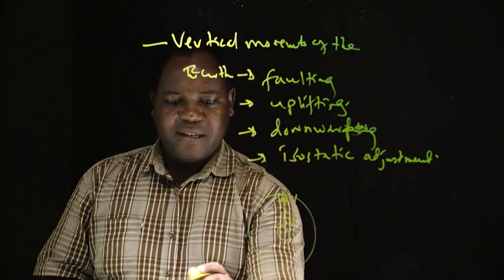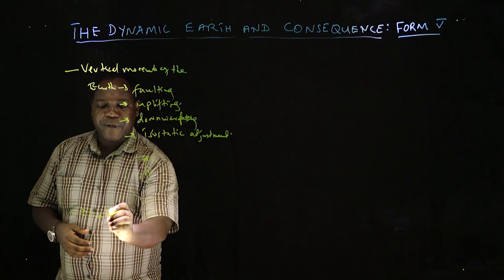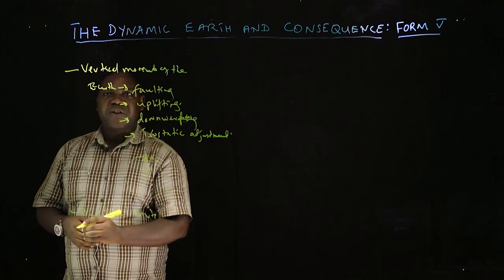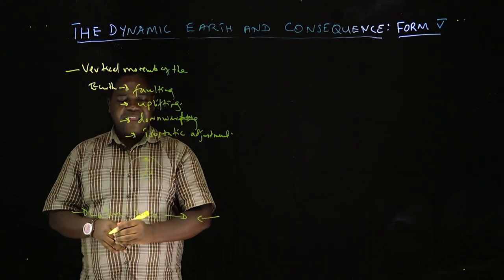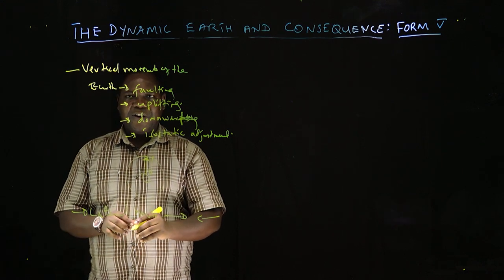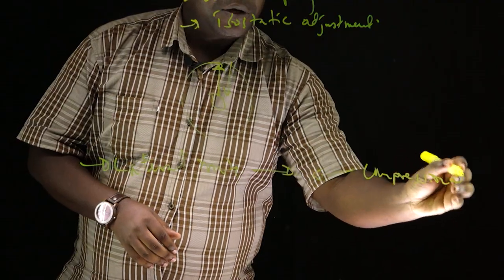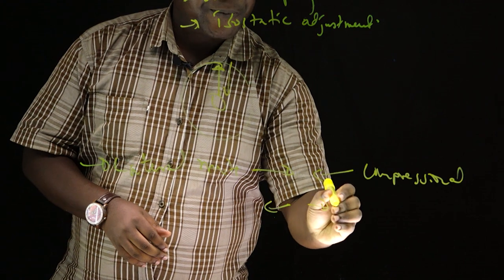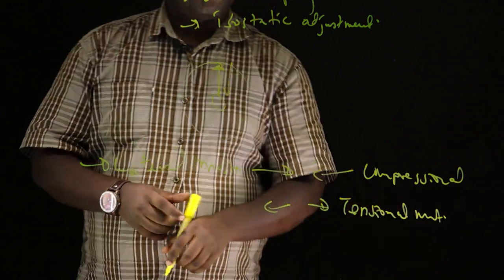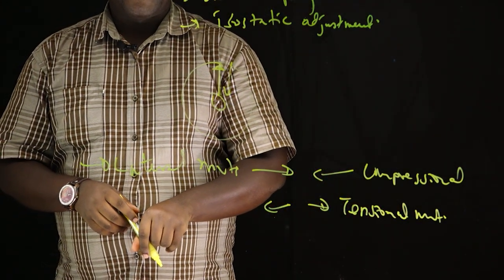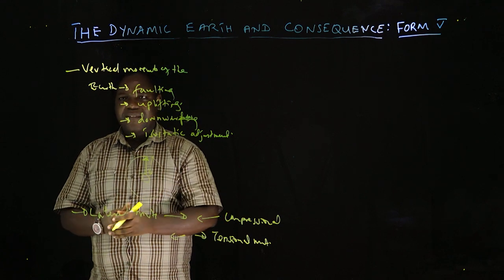The second movement, as part of introduction, is what we call lateral movement — the sideway movement. This is the sideway movement which may either be compression or tension movements. Because of these lateral movements, we witness what is called folding of the earth's surface and sometimes breaking of the earth's surface.